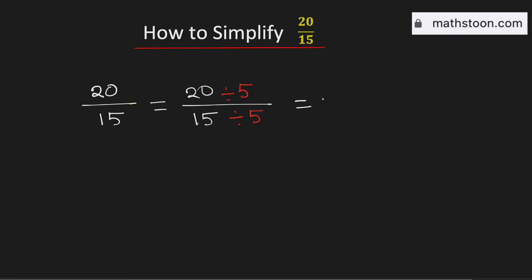By doing so we will get 4 over 3. Now we know that this fraction is already simplified. And as the numerator is greater than the denominator, it is an improper fraction. We will write it as a mixed number.